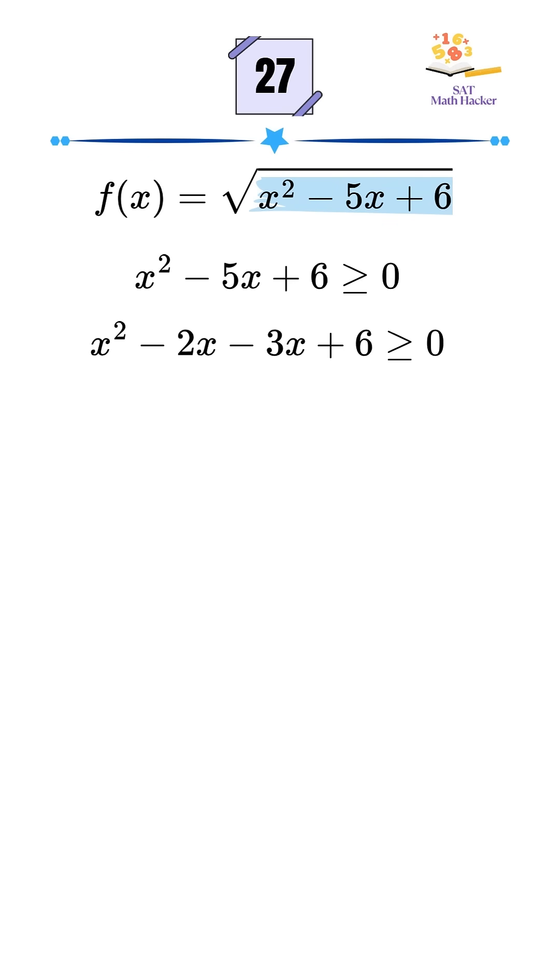Let's factor it. (x - 2)(x - 3) is greater than or equal to zero. Now we use a sign chart to determine where this expression is positive.